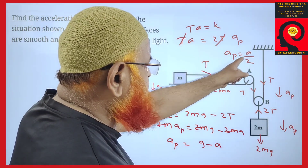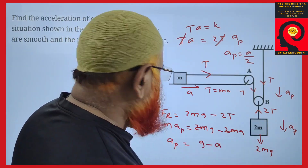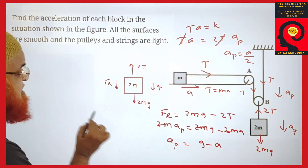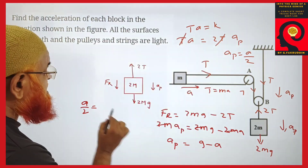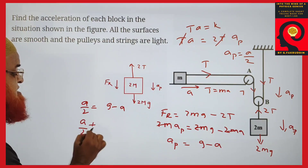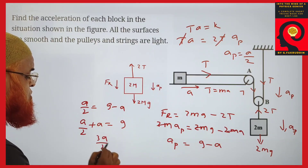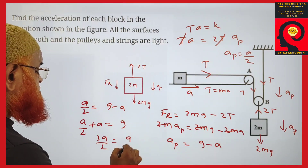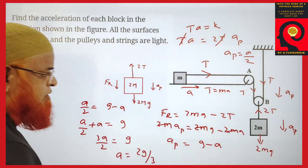We know acceleration of the pulley is acceleration of the block divided by 2, so we write A/2 equals G minus A. Therefore A/2 plus A equals G, giving 3A/2 equals G, and so A equals 2G/3.